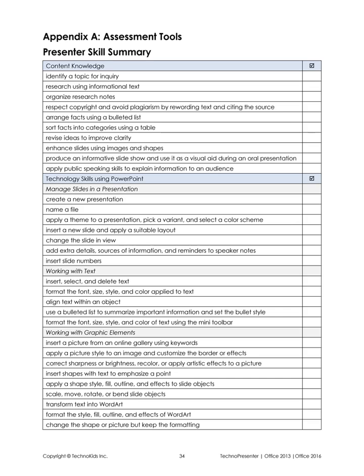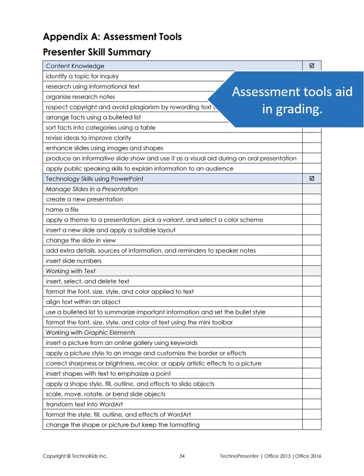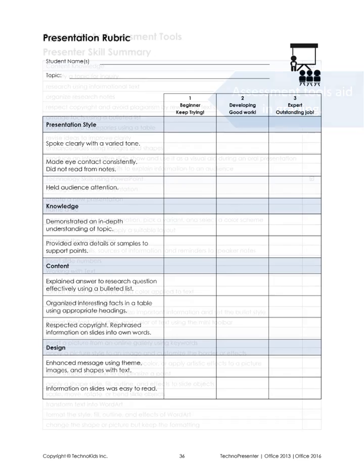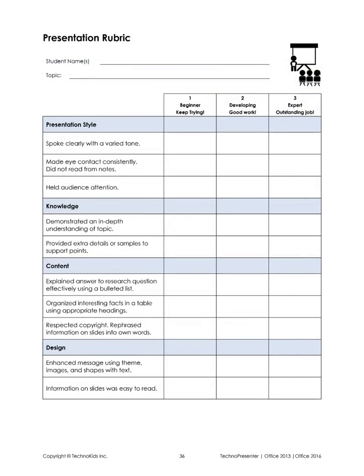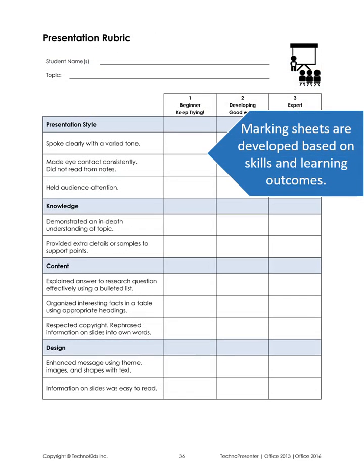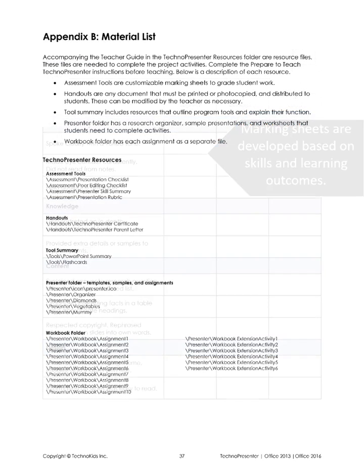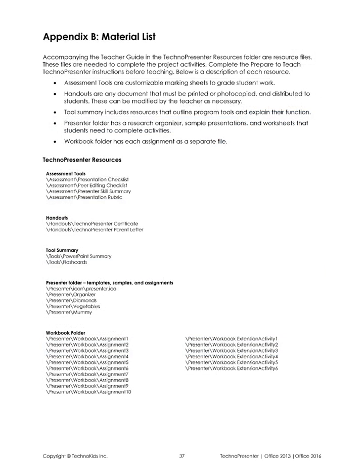The appendices include a skill summary that itemizes the different elements introduced or strengthened in the project. Marking sheets are developed based on skills and learning outcomes. The material list summarizes any additional resource files included with the project and where they can be found.